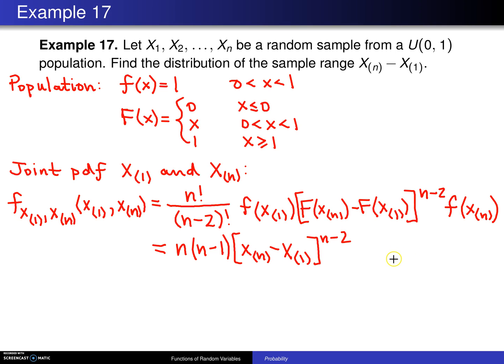The support of that distribution will be from 0 is less than x_(1) is less than x_(n) is less than 1. That's because the support of the population begins at 0 and ends at 1, so the minimum and the maximum must lie between 0 and 1.